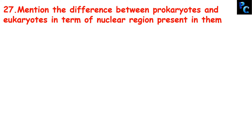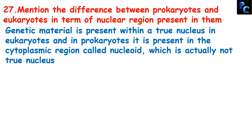Mention the differences between prokaryotic and eukaryotic cells in terms of the nuclear region present in them. Genetic material is present within a true nucleus in eukaryotes. In prokaryotes it is present in the cytoplasmic region called nucleoid, which is not a true nucleus. So in eukaryotes DNA is present within the nucleus, while in prokaryotes it is present in a place within the cytoplasm called nucleoid.